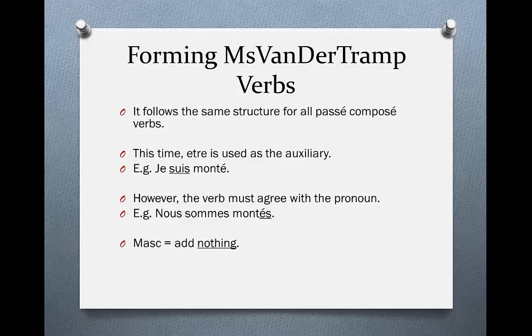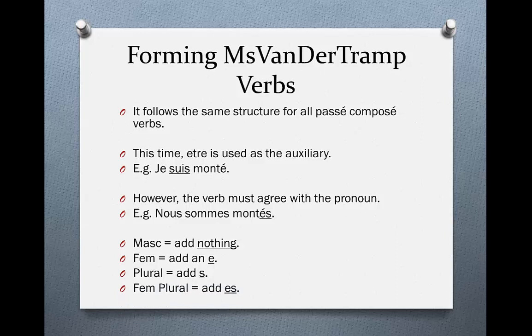These are the agreement rules. If it's masculine, you add nothing to the end. If it's feminine, you add an -e on the end. If there's a plurality, we add an -s. And if it's feminine and plural, we add -es. So, for example, elles sont montées would be spelt M-O-N-T-E-E-S.